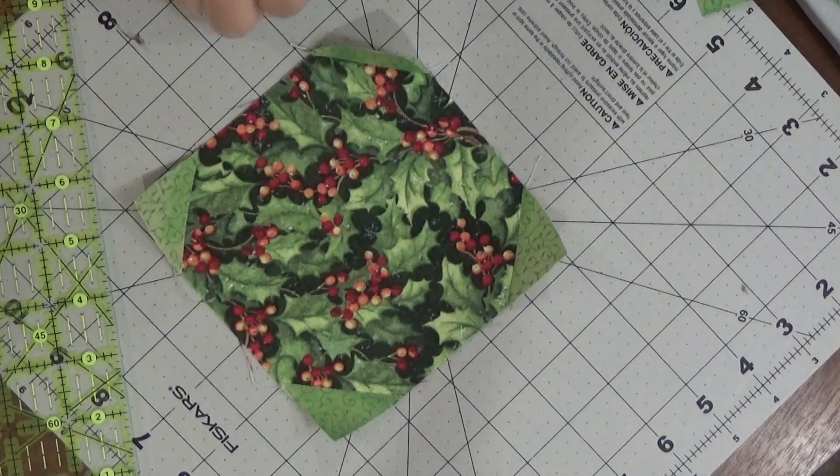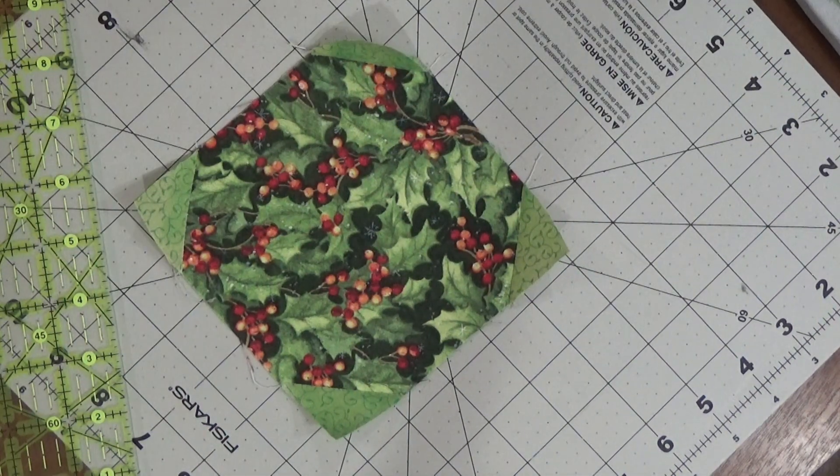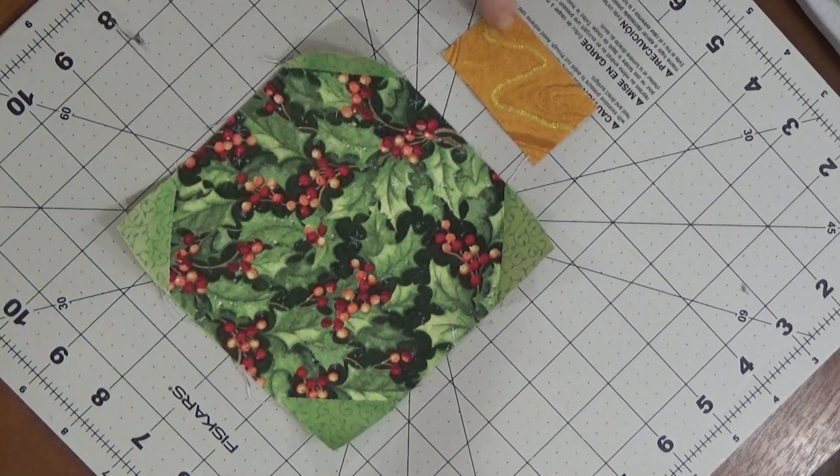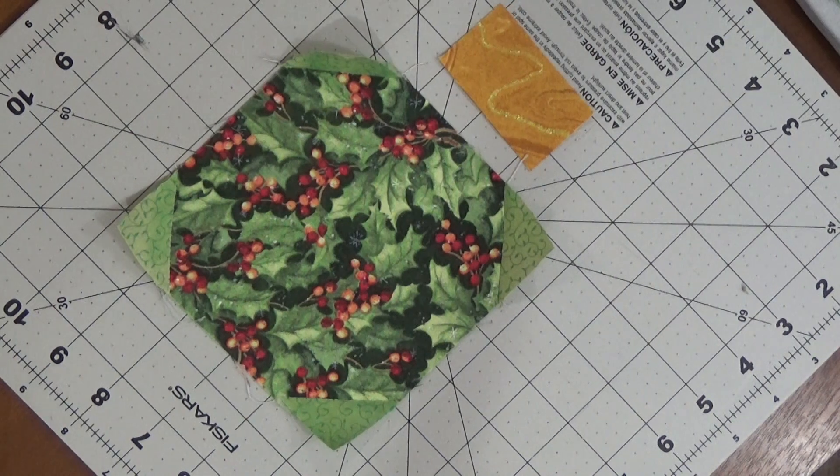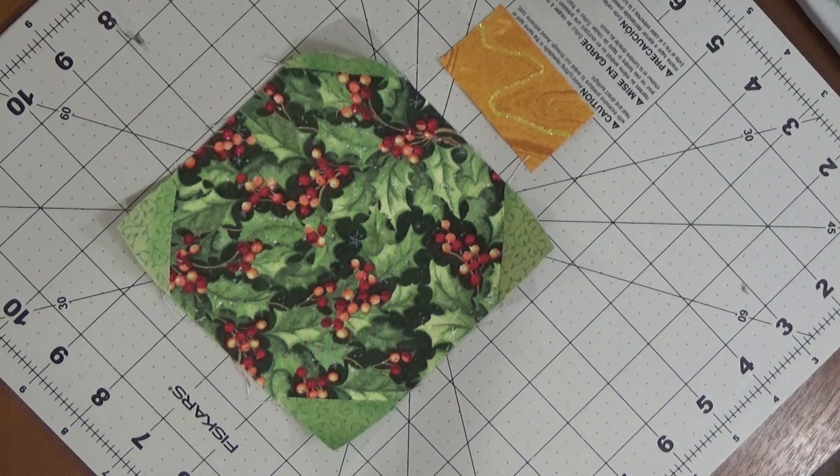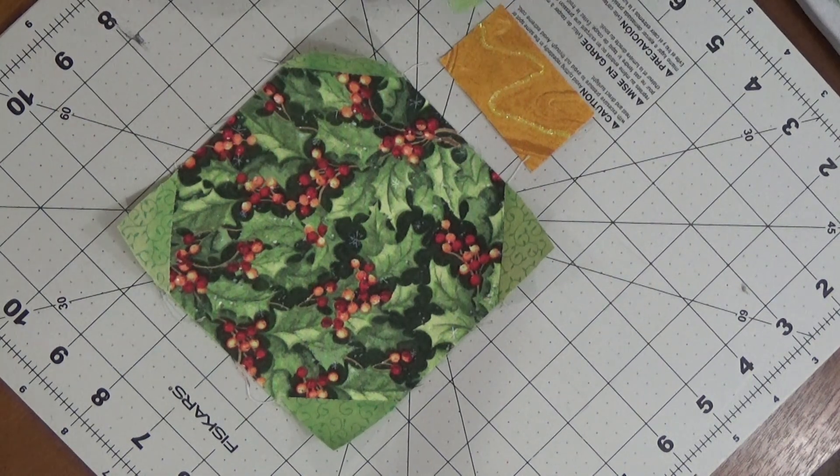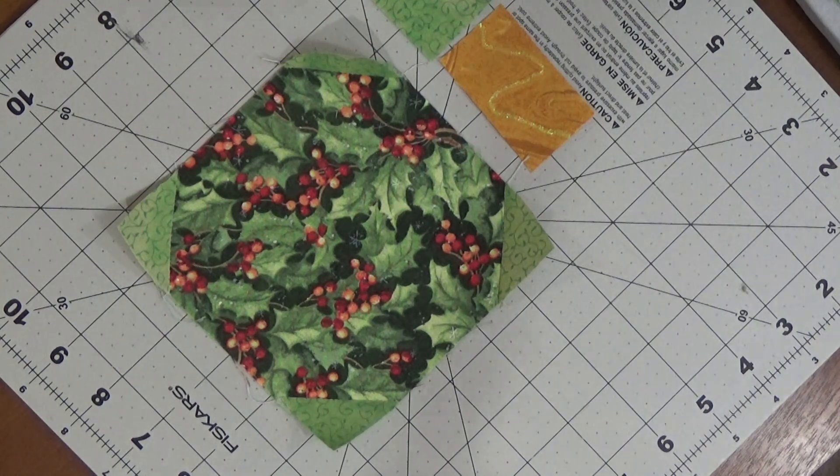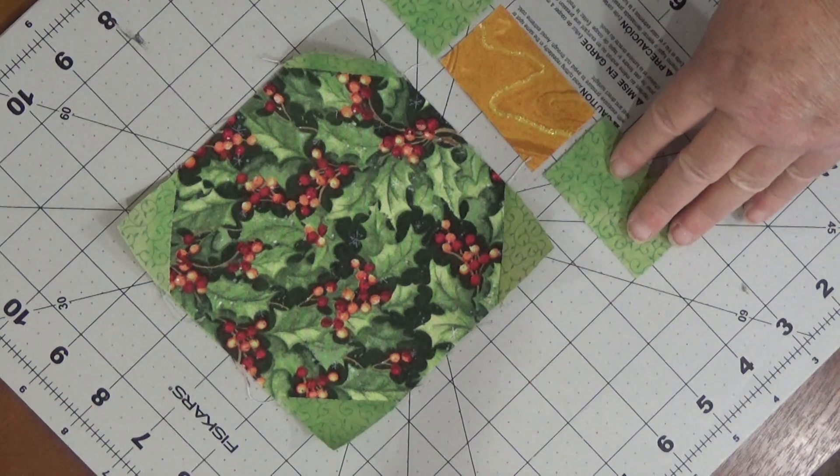So we've got that open. I have this really pretty gold that I found in my stash, so I'm going to use that and I'm going to use my background, and I'm just going to sew them together like that.